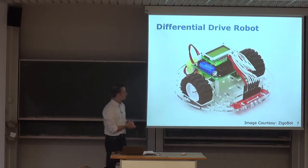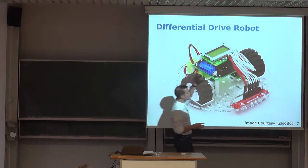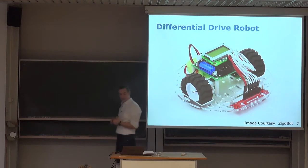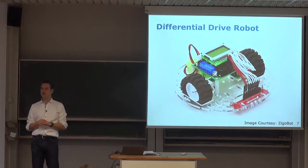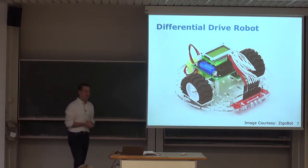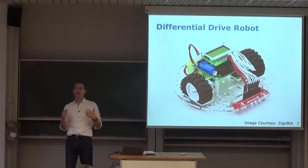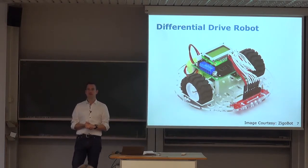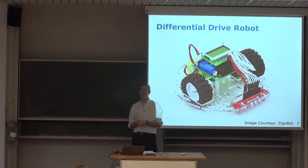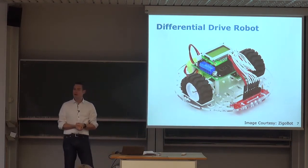A slightly more minimal robot with the same steering: you have two big wheels, one on the left and one on the right, and you can set the velocity commands of those wheels independently. There is a motor attached to the right wheel and a motor attached to the left wheel. By controlling each motor independently, you can generate different motions. This is one of the simplest forms of drive and is found in many systems because it has quite attractive properties.